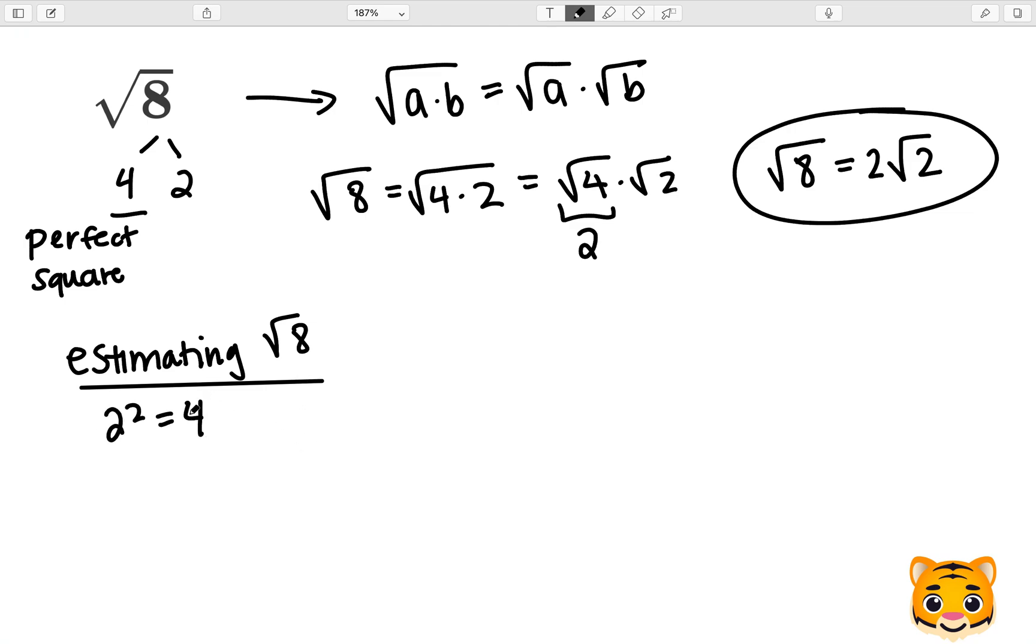2 squared gives us 4, and 3 squared gives us 9. Because 8 is between 4 and 9, we can write the following inequality. The square root of 4 is less than the square root of 8, which is less than the square root of 9.